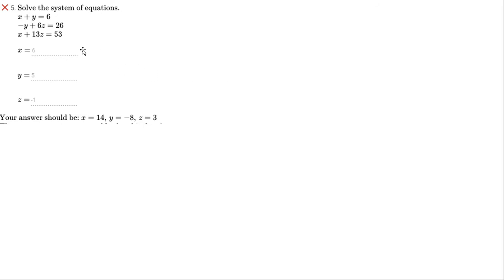Let's look at this other one. This one's not quite as nice, but also not too bad. So again, let me just write them out here. X plus Y equals 6. X plus negative Y plus 6Z equals 26. I guess I could have left room there for my 0Z. X plus 13Z equals 53.